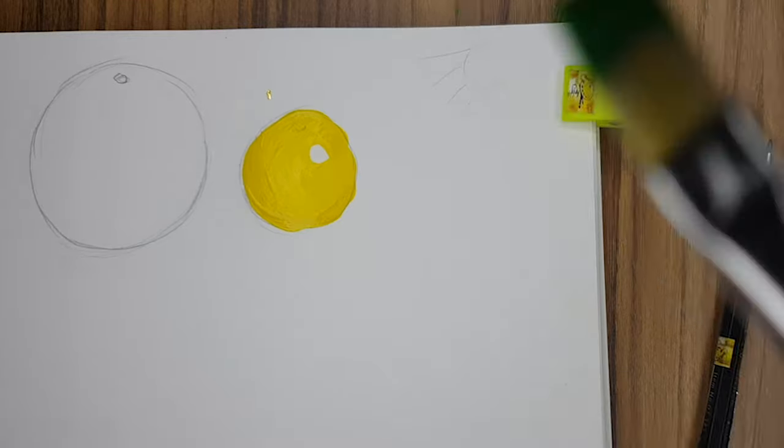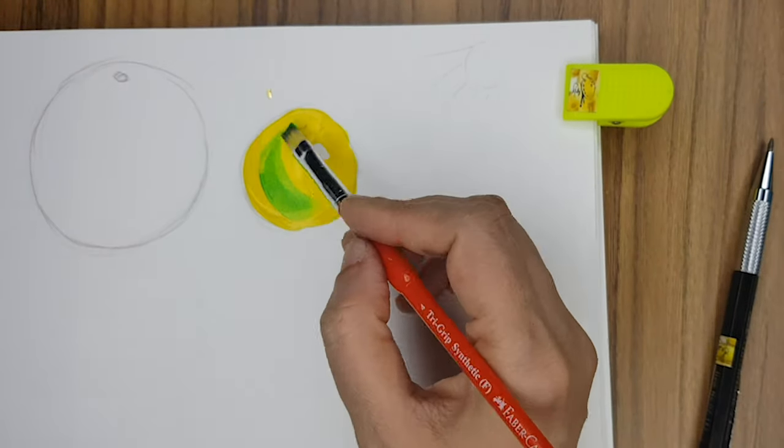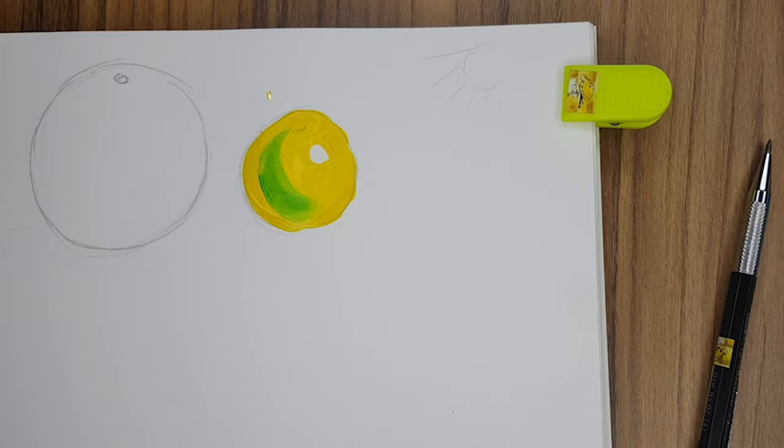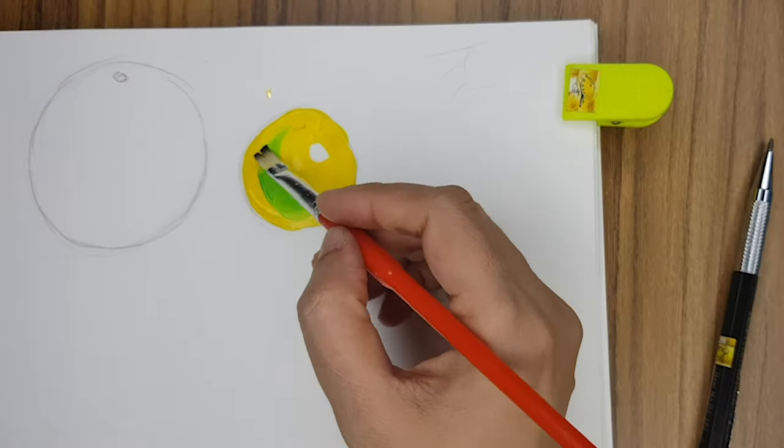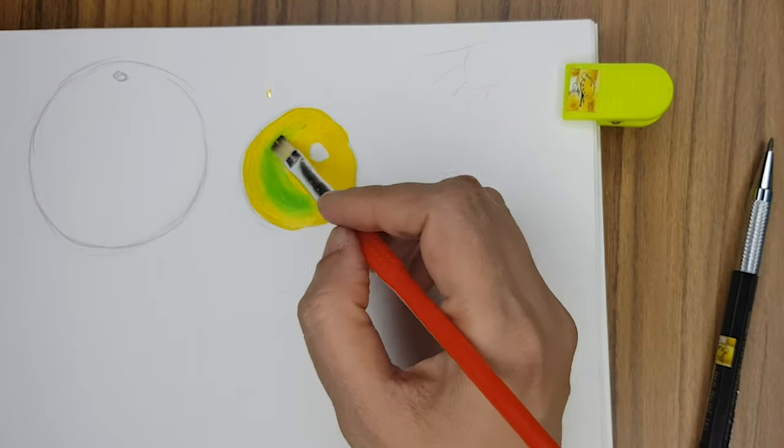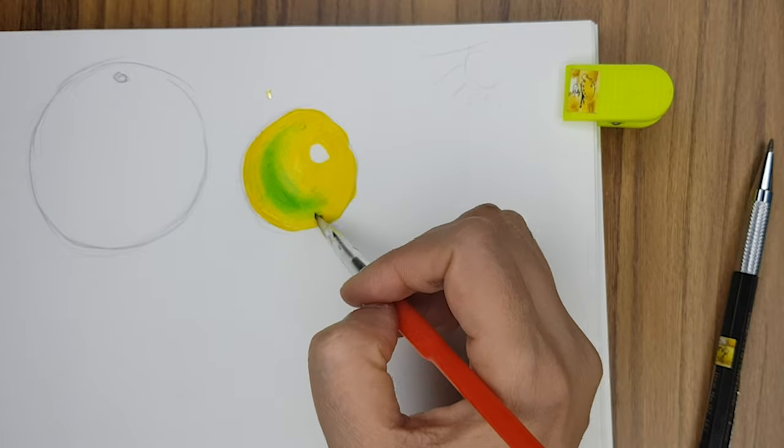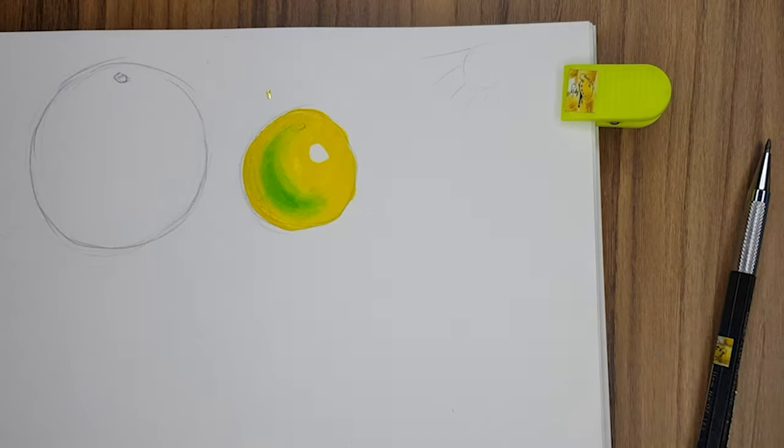Take light green color and add the roundness, and then with a moist brush mix the light green and the lemon yellow as you can see in the video.